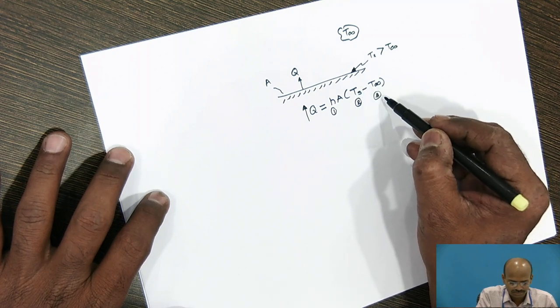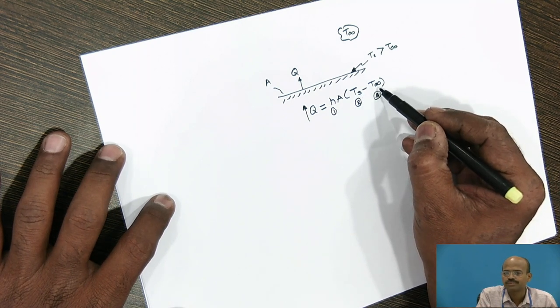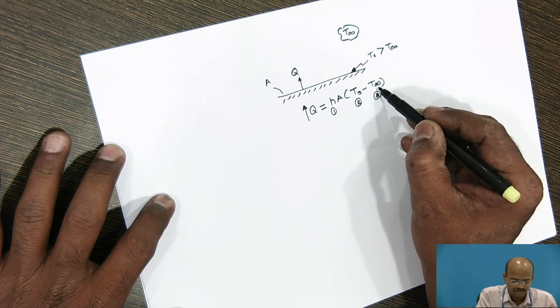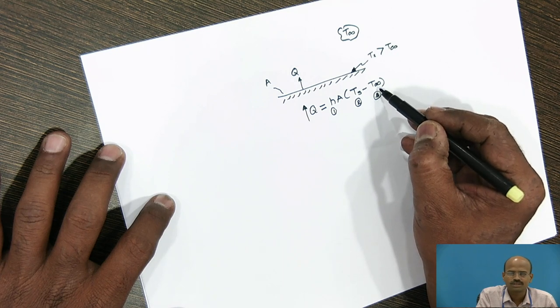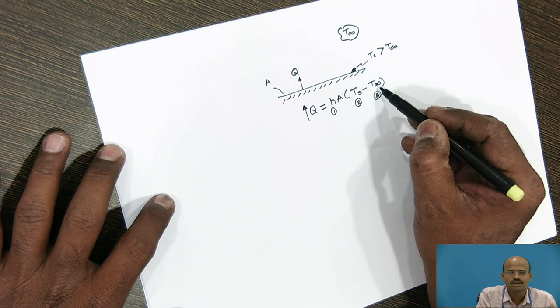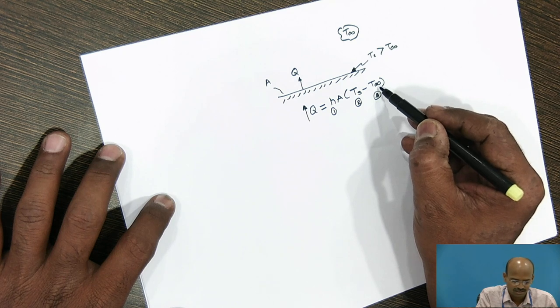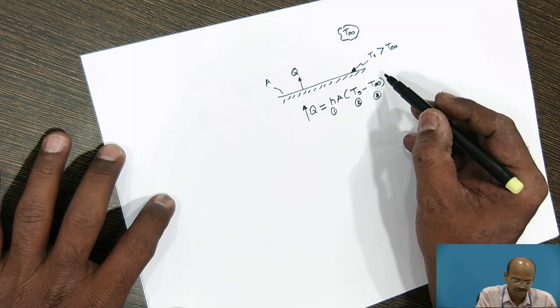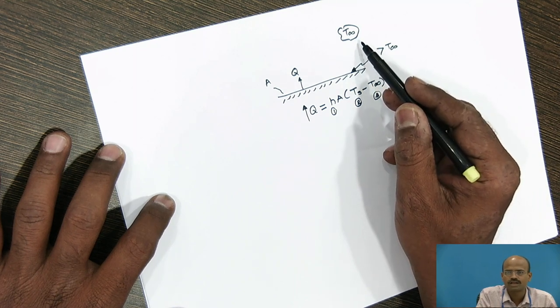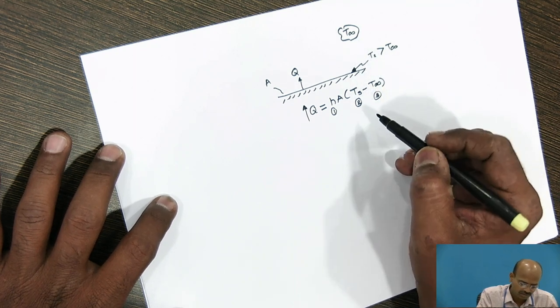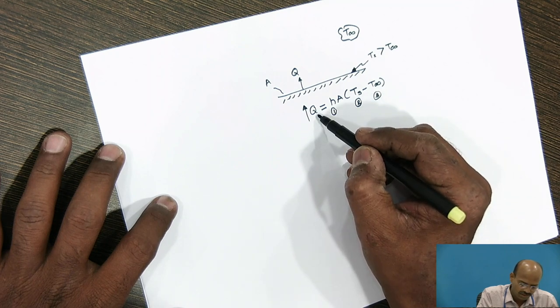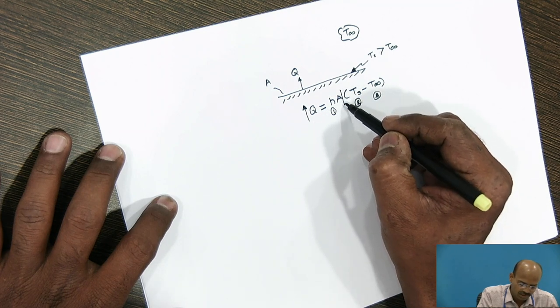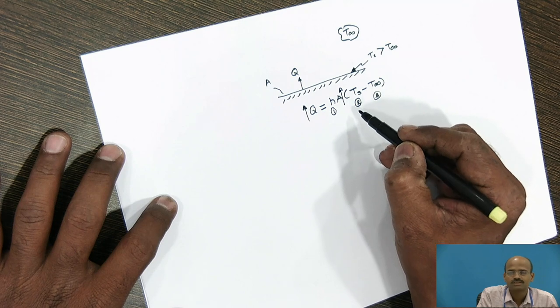Third option is surrounding fluid temperature. Surrounding temperature, once again we cannot change, we cannot increase the atmospheric temperature. It changes from time. So, this is the unsteady state temperature of the atmosphere. Now, increase in Q is possible only if we increase the surface area.